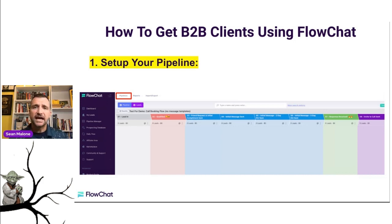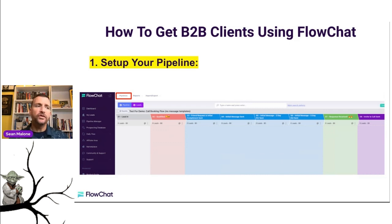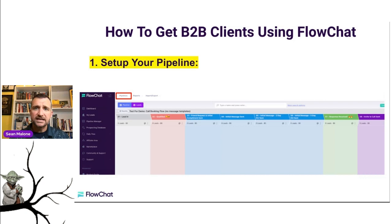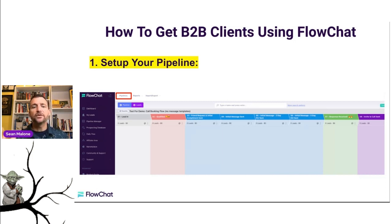Our team here at FlowChat has tested this system in over 300,000 different messaging conversations. The software has been running since 2017, but only publicly for the last two years. So we have all the bugs worked out. And pound for pound, if you watched my last episode, you know that this is gonna be the most effective one-to-one strategy at scale that you can run. So what we do is we set up a pipeline.